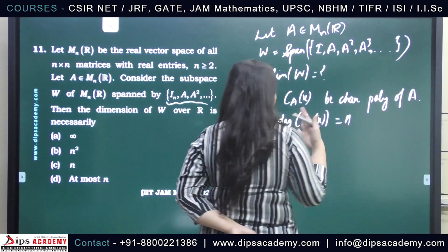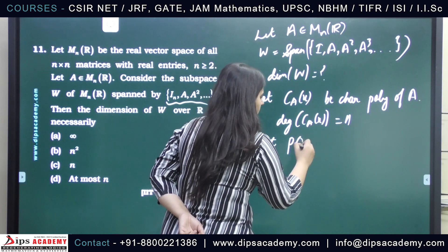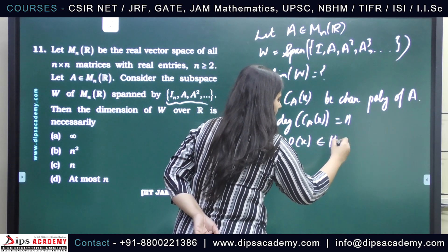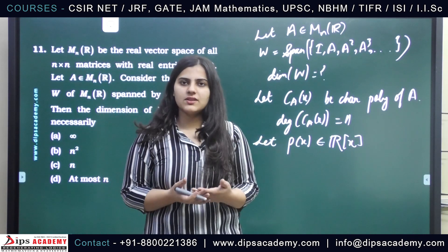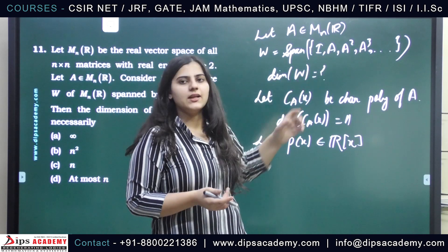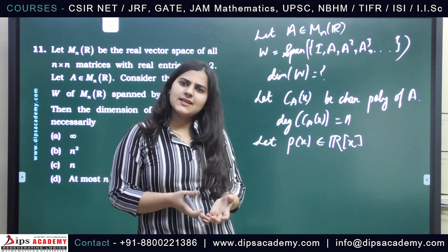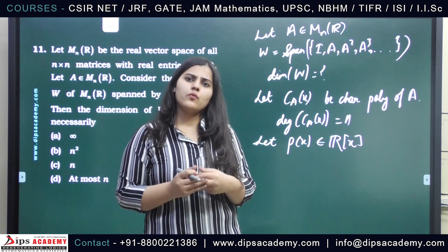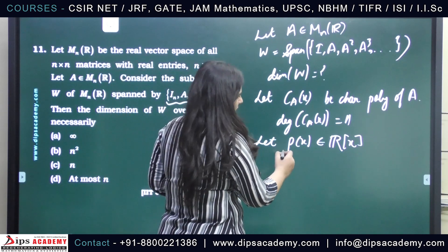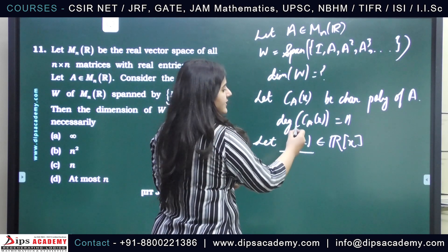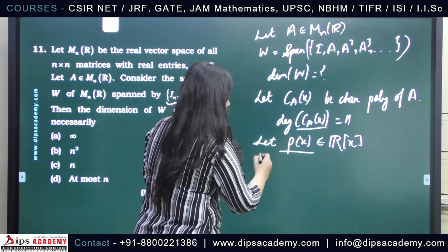Now, let P(x) be any polynomial in R[x]. Because we need to find the space spanned by powers of A, that space also contains linear combinations of these powers — meaning it contains polynomials with A as the argument. So, for any polynomial P(x) in R[x] and C(x), the characteristic polynomial of A, I can apply the division algorithm.